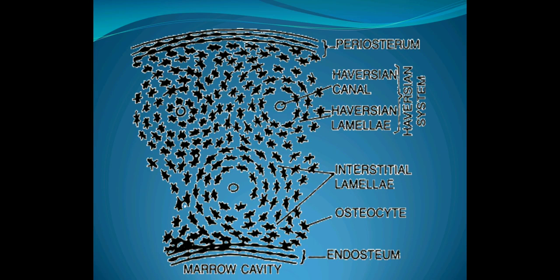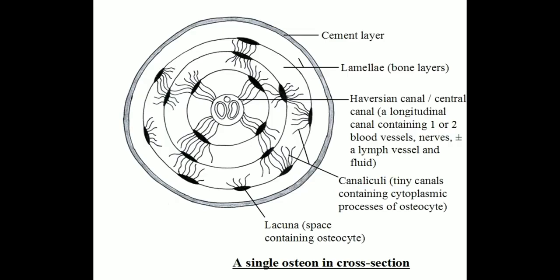In the periosteum, blood vessels and nerves pierce through it. The matrix is arranged in the form of concentric layers called lamella. Each lamella contains fluid-filled cavities called lacuna. Fine canals that radiate from each lacuna are called canaliculi. Canaliculi of adjacent lamella connect with each other as they traverse through the matrix.